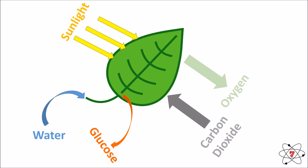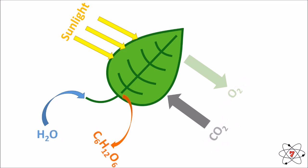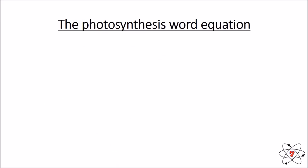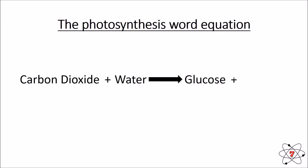This is a type of reaction called a photochemical reaction. We can substitute words for symbols: water is H₂O, carbon dioxide is CO₂, glucose is C₆H₁₂O₆, and oxygen is O₂. Knowing the chemical formula for each substance allows us to construct symbol equations. The word equation for photosynthesis is: carbon dioxide plus water makes glucose plus oxygen.